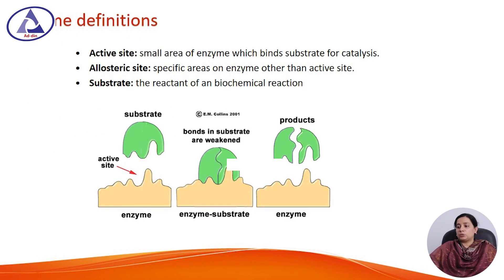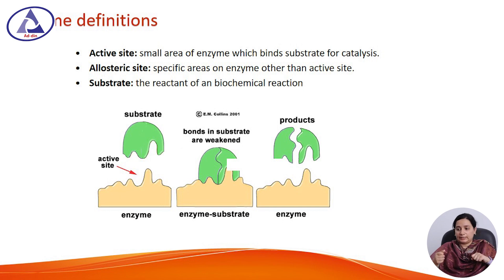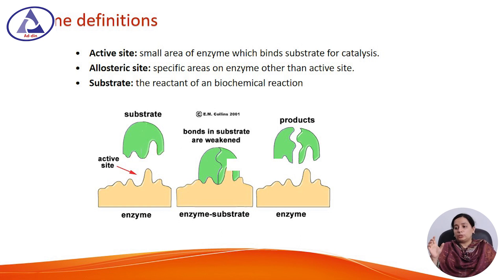The active site is the small area of the enzyme which binds the substrate for catalysis. Enzyme has different types of sites — the active site is where the substrate binds with the enzyme for catalysis. There is another site other than the active site known as the allosteric site. These are specific areas of the enzyme other than the active site that regulate enzyme activity, and may either inhibit or accelerate enzyme activity. The substrate is the reactant of the chemical reaction.